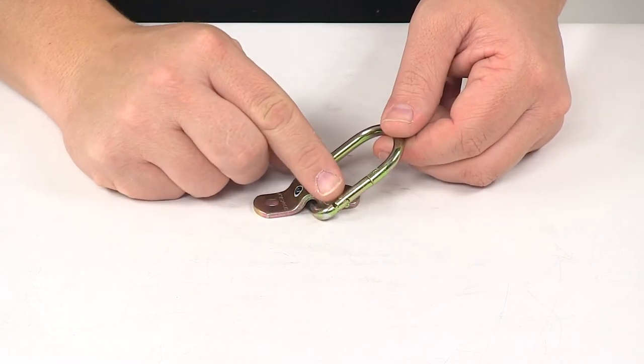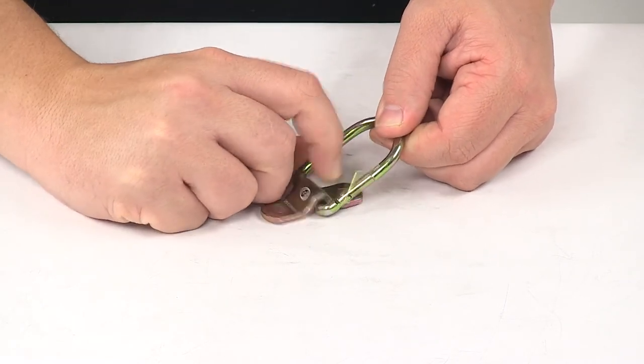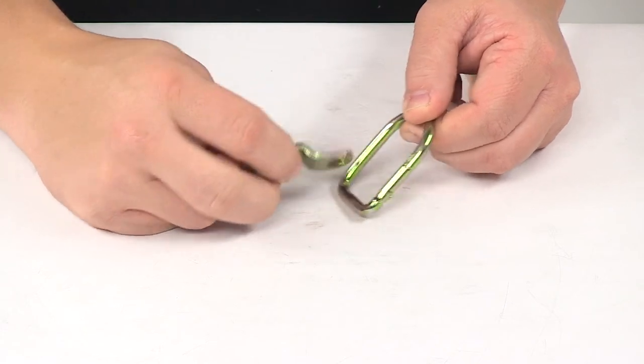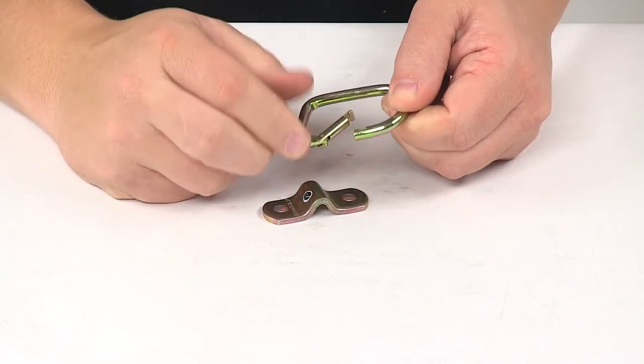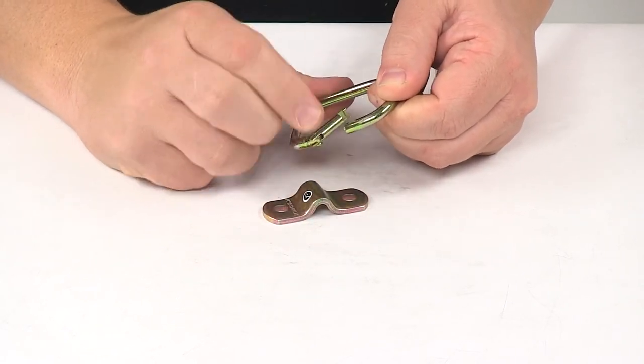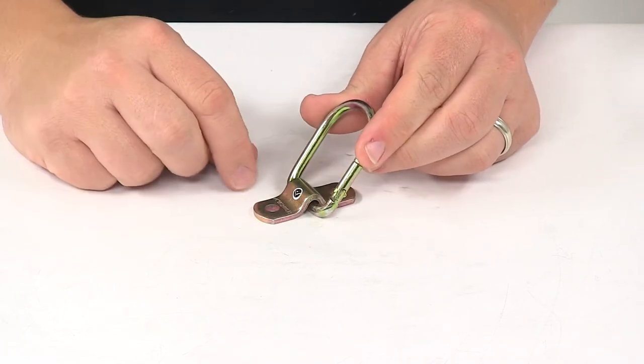On this side we have a latch mechanism. This allows you to easily secure your tie-down strap or chain to the unit. It's a spring-loaded design, so it snaps back and prevents accidental disconnecting.